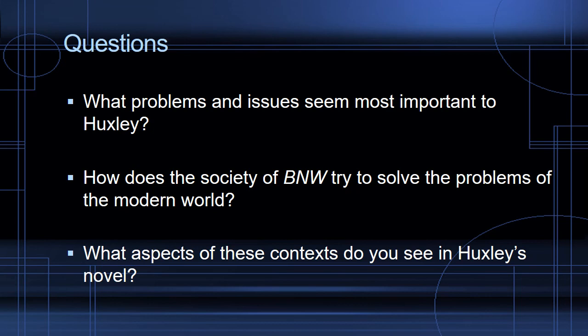A couple of final questions: What problems and issues in his time seem most important to Huxley based on the novel? What seem to be the most pressing challenges, and what does he think are the biggest dangers we face? How does the society of Brave New World try to solve the problems of the modern world — issues of population, instability, and violence? How do they do that through the different ideas we've seen in this lecture? Those are starting questions for you to think about. If you have other questions, contact me via email. I'll see you in my next video.